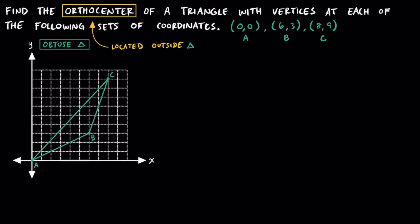To find the orthocenter, we need to find where the three altitudes of this triangle meet. Because altitudes are perpendicular to each of the side lengths, we need to find the slope of each side length so that we can use the opposite reciprocal slope for each altitude. Because A is located at (0, 0), I'm going to start with segment AB. The slope of AB is the ratio of vertical change to horizontal change: positive 3 units over positive 6 units, so the slope of segment AB is equal to 1/2.